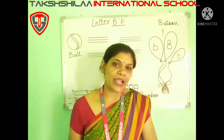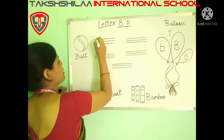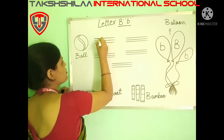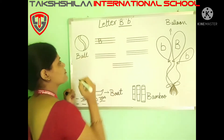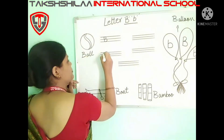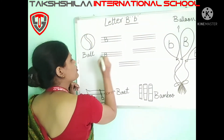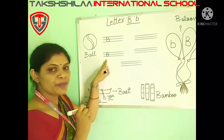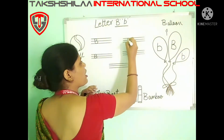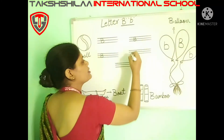Let's understand how to write capital letter B. So — standing line, half curve, one more half curve. This is letter B, capital B. Standing line, half curve, one more half curve — letter B, capital B. Standing line, half curve, one more half curve — capital letter B.